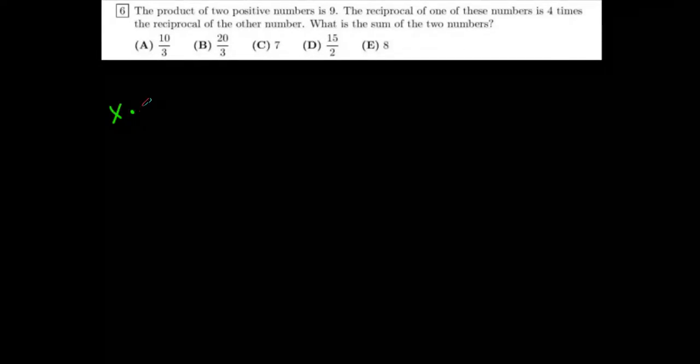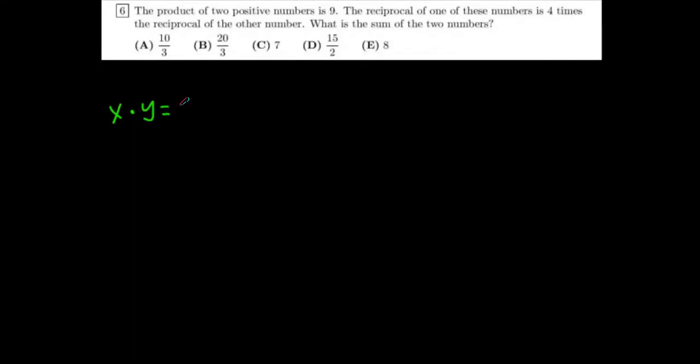So, we know that the product of two positive numbers is nine. So we can say that, let's say these two positive numbers is x times y equals nine.